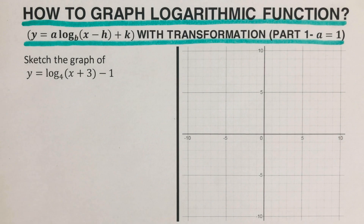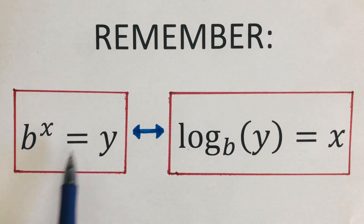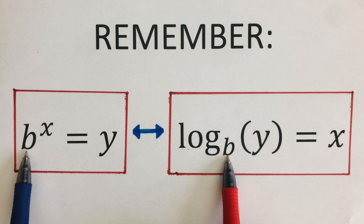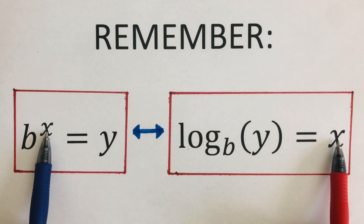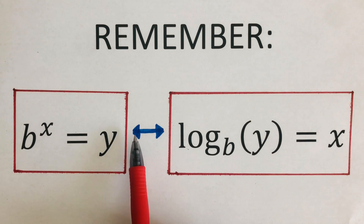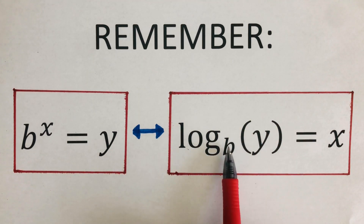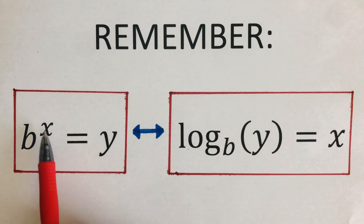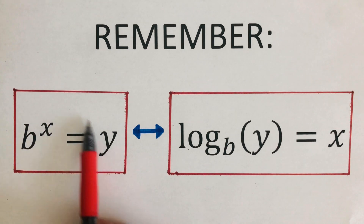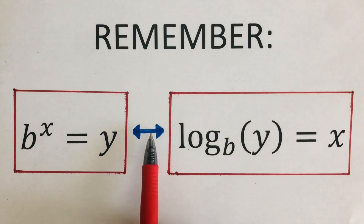Let's have a review on the basics of the logarithmic equation. We remember that the logarithmic equation is the inverse of the exponential equation. The base goes here, the exponent x is on one side of the logarithmic equation, and y goes on the other side. The arrow goes back and forth, meaning we can convert between logarithmic and exponential forms by rearranging these variables in the exact arrangement.